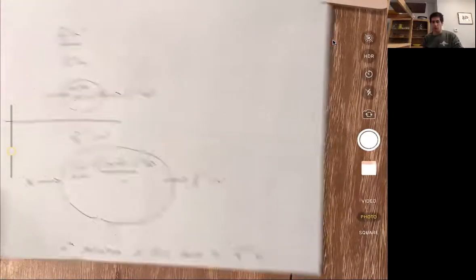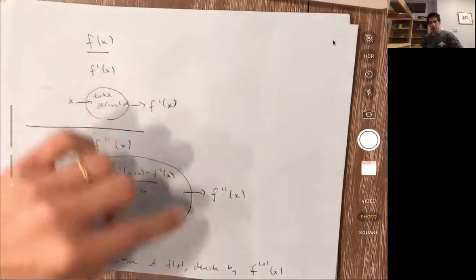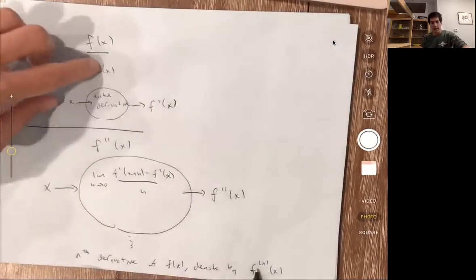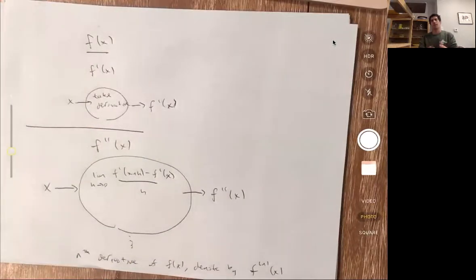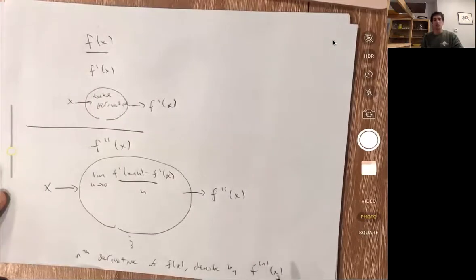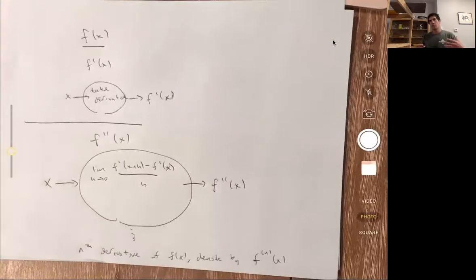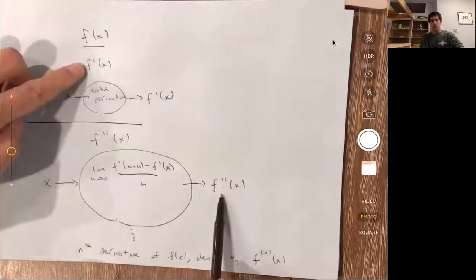When we do first derivative, second derivative, third derivative, we often write one dash mark here, two dash marks here, three dash marks here. Of course, if I'm taking, say, 10 derivatives, I don't want to write 10 apostrophes up here. So then we start using this notation instead. But most of the time, we'll work with the first or second derivative. And then we'll use this notation.